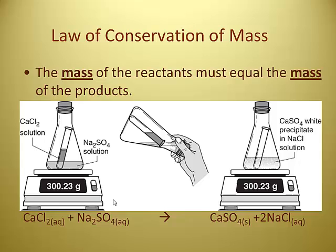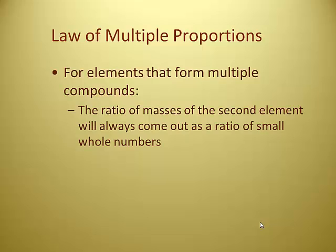The law of conservation of mass — we're going to do this demo in class on Tuesday. This law says the mass of the reactants must equal the mass of the products. You cannot destroy any mass during a chemical reaction. If you have a sealed flask with two solutions that react, you'll wind up with the same mass after as before. The law of multiple proportions states that for elements that form multiple compounds, the ratio of masses of the second element will always come out as a ratio of small whole numbers.